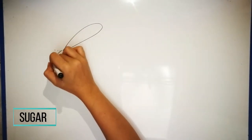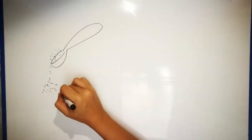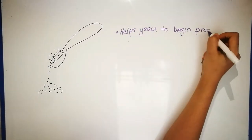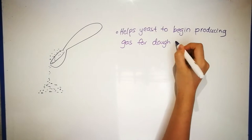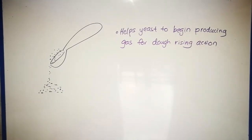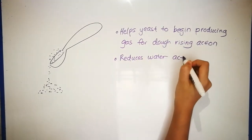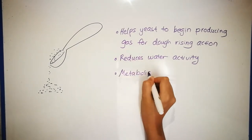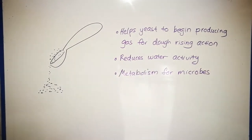The next thing on the list is sugar. Sugar not only helps yeast to begin producing gas for dough rising action, but it can also reduce water activity. However, microbes will also feed on the sugar for metabolism.